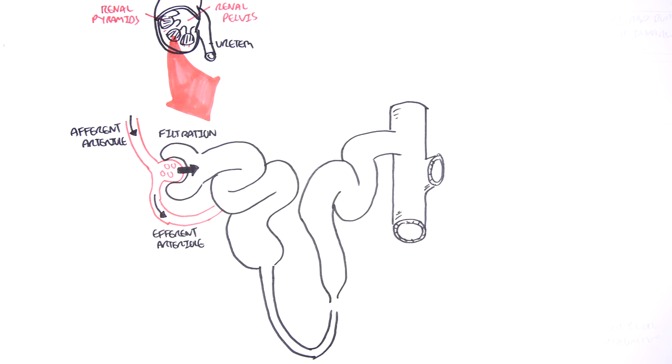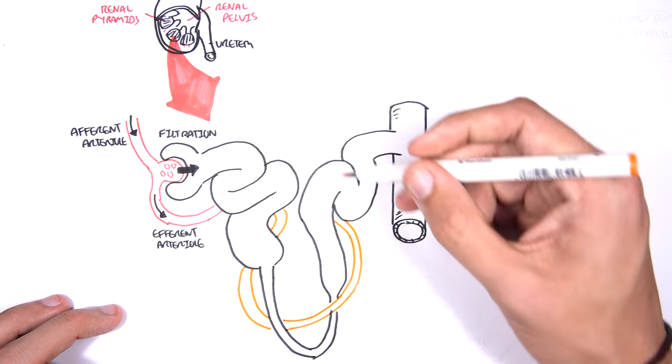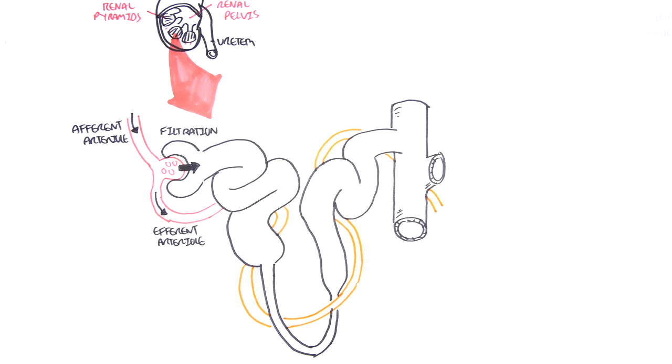And this efferent arteriole will essentially make its way around the nephron as the vasa recta. The vasa recta's role is to reabsorb things from the filtrate that is within the nephron.